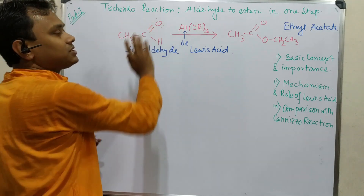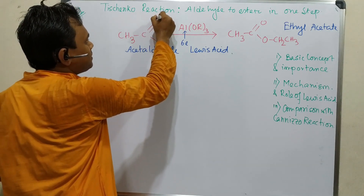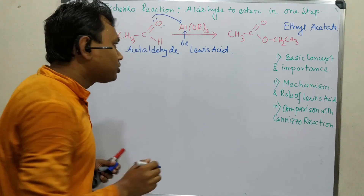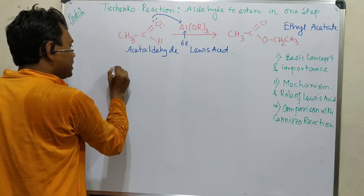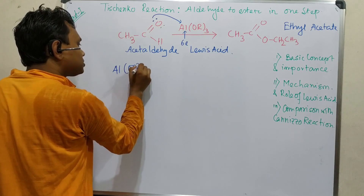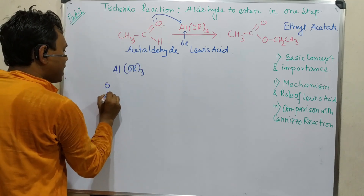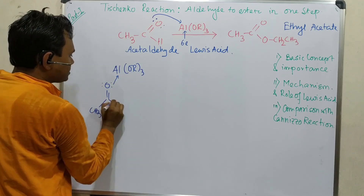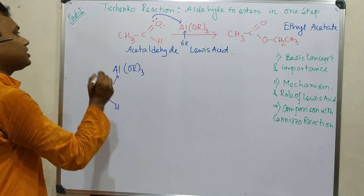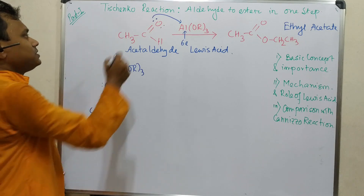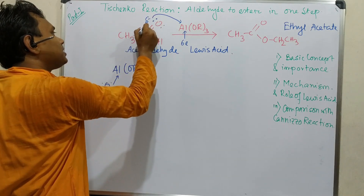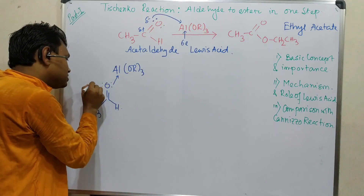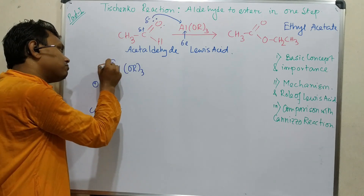Oxygen is a Lewis base with a lone pair, and this lone pair is donated to the vacant p-orbital of aluminum. As a result, an adduct forms. Because of the carbonyl resonance — delta minus on oxygen, delta plus on carbon — the oxygen that coordinates to aluminum acquires a formal positive charge, while aluminum acquires a formal negative charge.